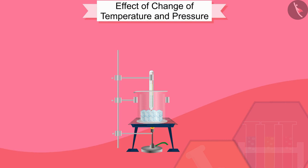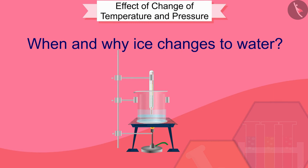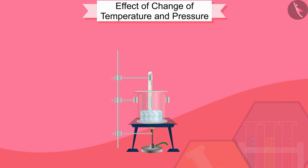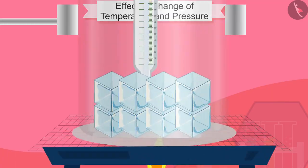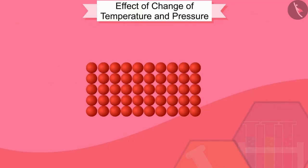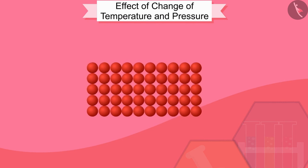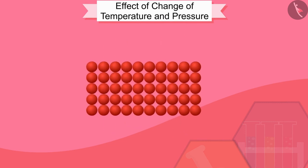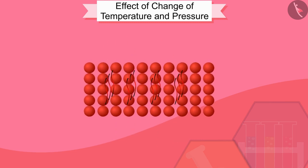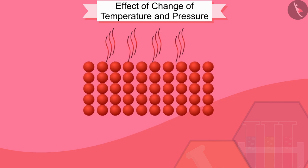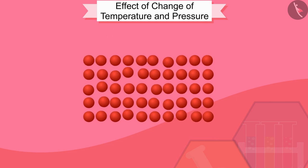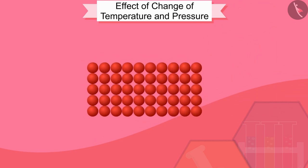Let us first discuss observations in the conversion from ice to water — when and why ice changes to water. When we start heating ice, the kinetic energy of particles present in the ice or solid increases as the temperature increases. As the kinetic energy increases, the particles vibrate more quickly. The energy supplied by heat overcomes the forces of attraction between the particles. The particles leave their fixed positions and start moving more freely.